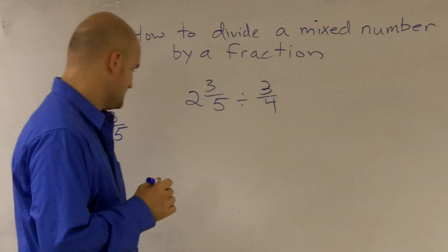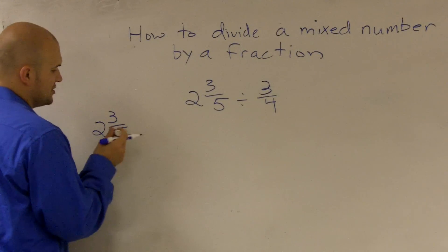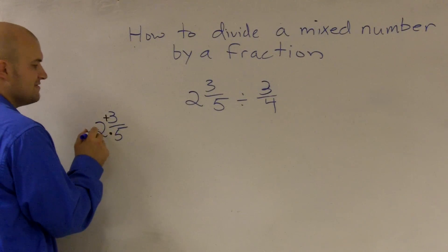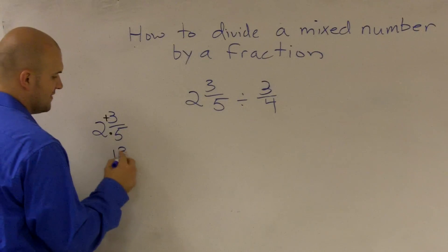As I've taught in past videos, when converting a mixed number to a fraction, we multiply our denominator times our whole number and then add the numerator. So 2 times 5 is 10, plus 3 would be 13 fifths.